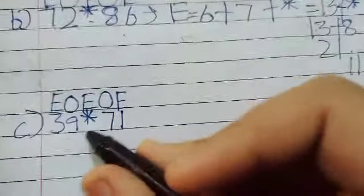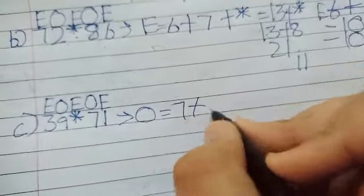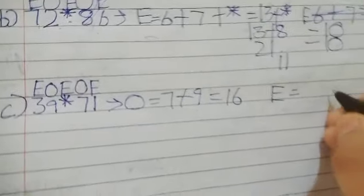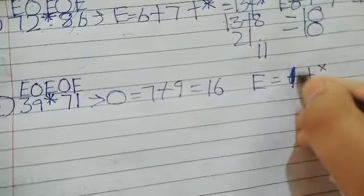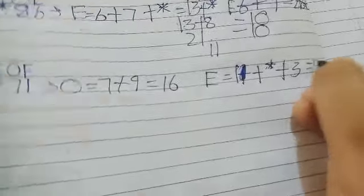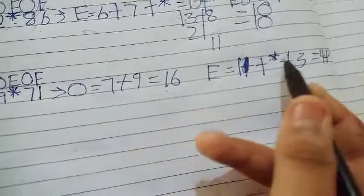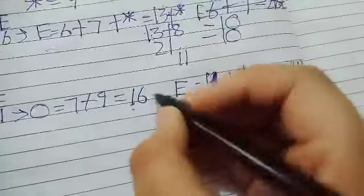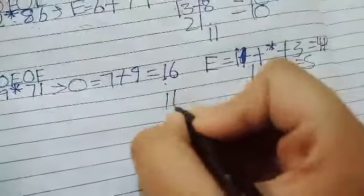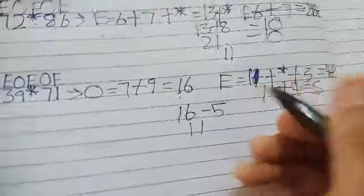Part C: odd-place sum is 7 + 9 = 16. Even-place sum is 1 + star + 3 = 4 + star. We need 16 − (4 + star) = 11, so 4 + star = 5, giving star = 5. Check: 16 − (4 + 5) = 16 − 9 = 7... re-checking: we need the answer to be 11, so 16 − 5 = 11, star = 5.